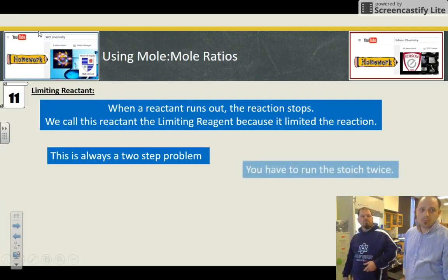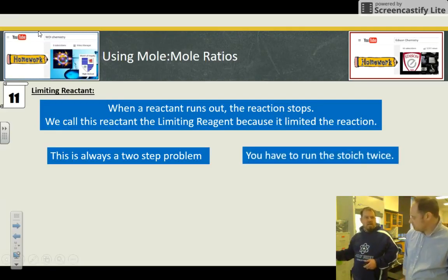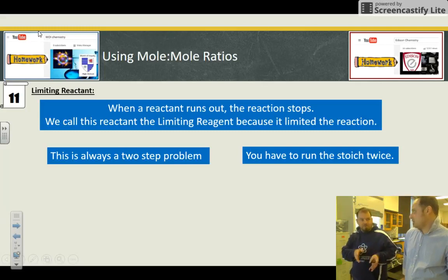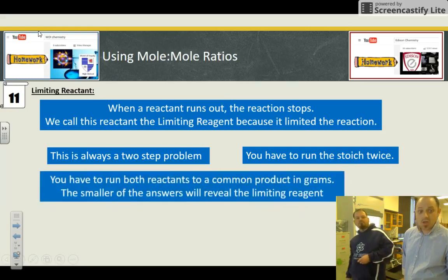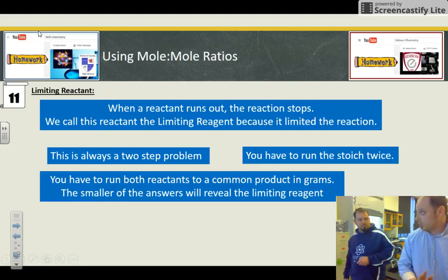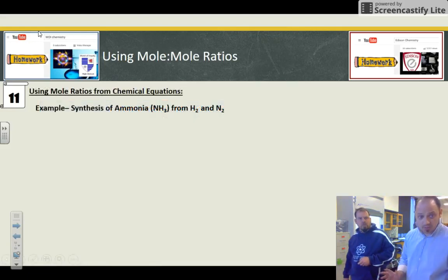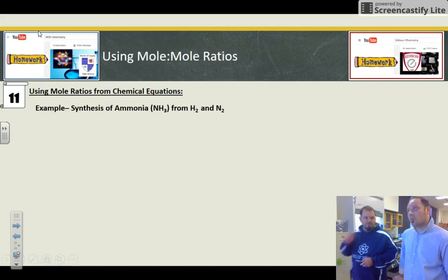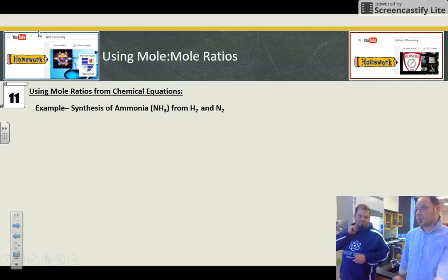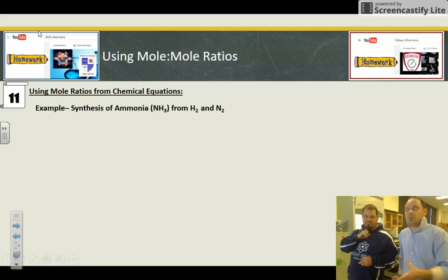So this is a two-step problem. You got to run the stoic twice. Run the stoic means transfer from grams to moles and then mole to mole ratio. You have to run both reactants to a common product in grams. And the smaller of the answers will reveal the limiting reagent. These are very rare, but we'll try and show you an example.